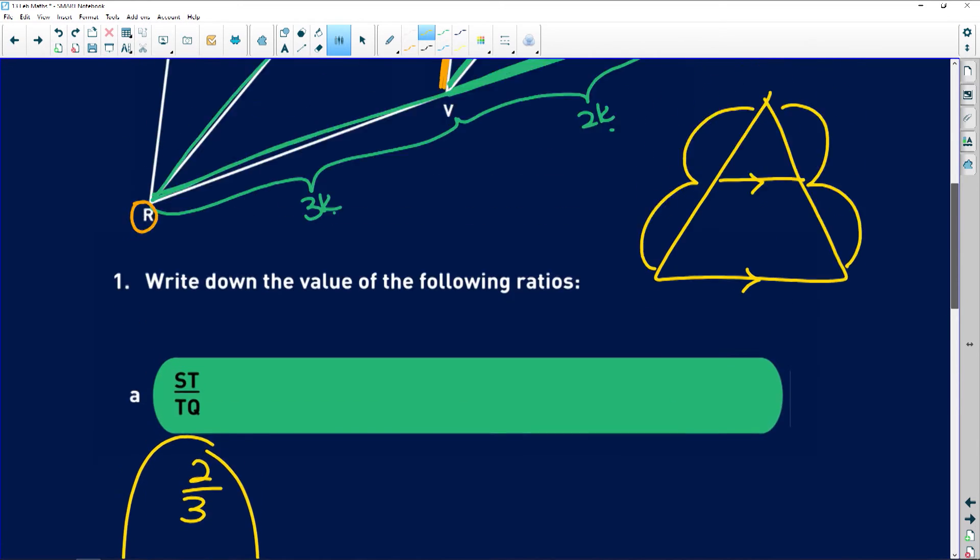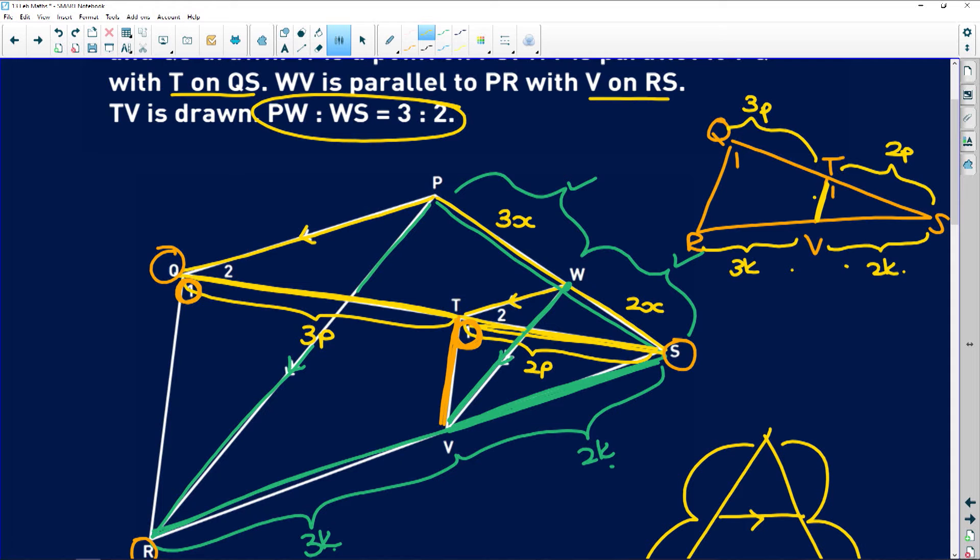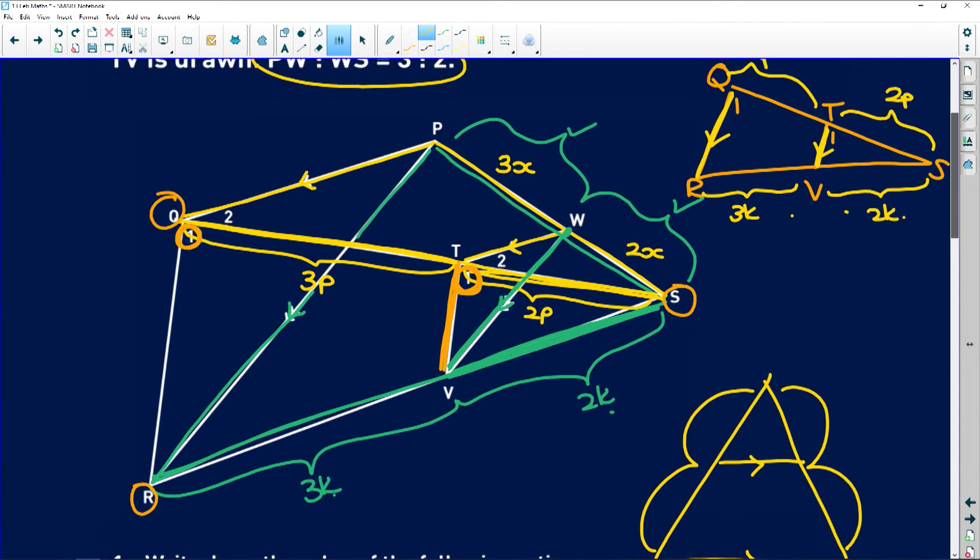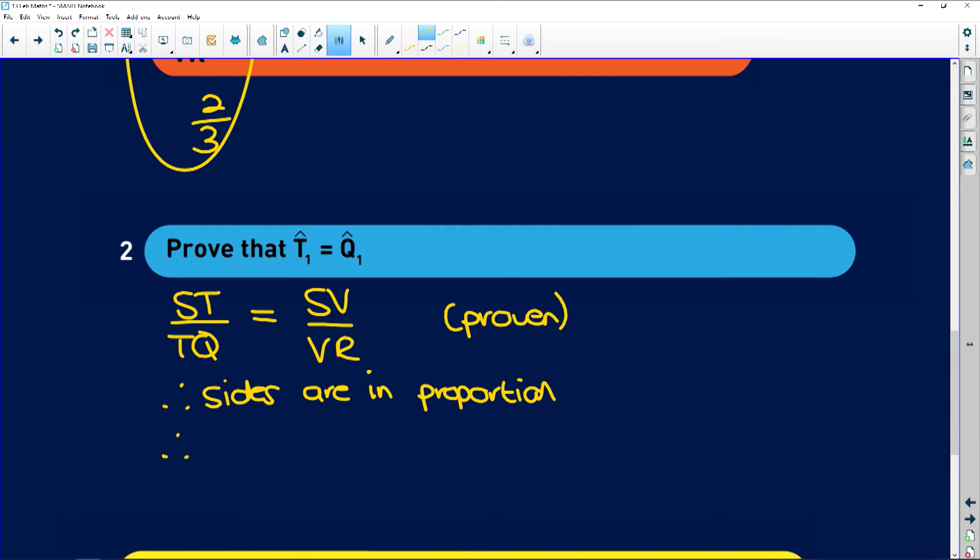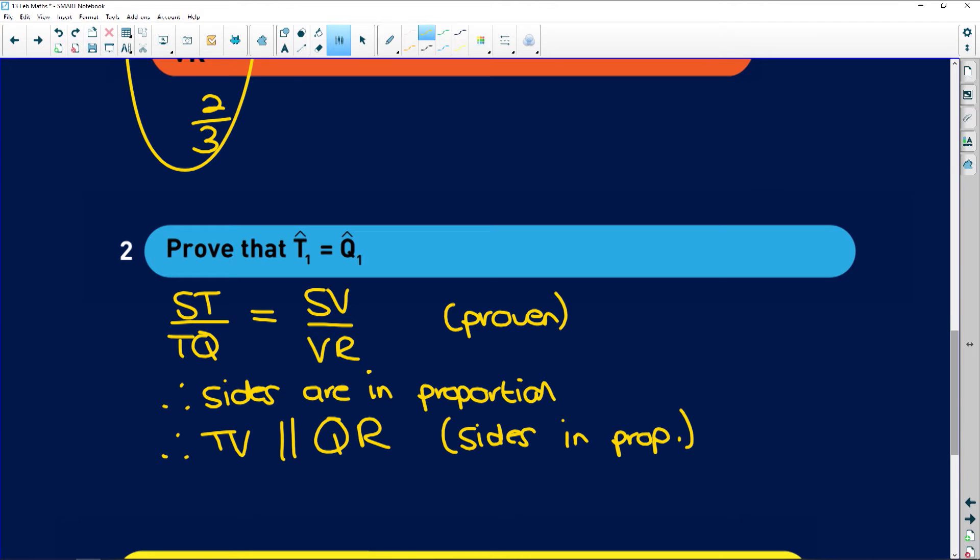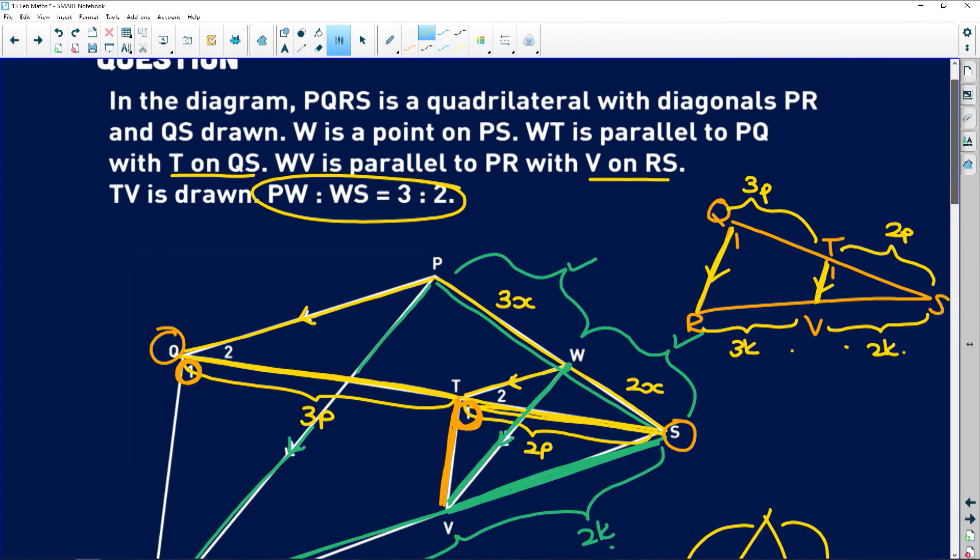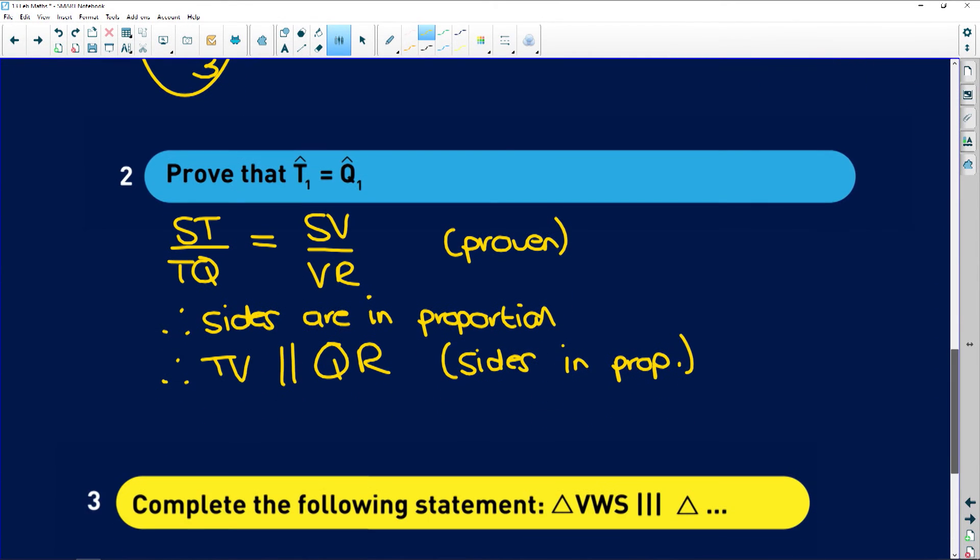So let's take a look here. In our triangle it means that because those sides are in proportion these two sides are parallel. TV is parallel to QR. Therefore TV is parallel to QR and give a reason guys. Sides in proportion. Why did we establish this parallel relationship? Well now if we look at our triangle over here if we have a transversal cutting parallel lines we know that the corresponding angles are equal to each other. Therefore T1 is equal to Q1 and your reason is corresponding angles and give your parallel lines so that your examiner knows where you're talking about. Always treat your examiner like they have no clue.